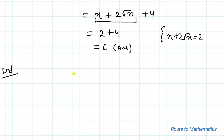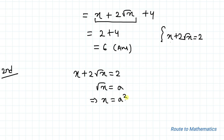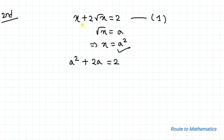In the second method, we have given x plus 2 root x equals 2. Here I'll take root x as a, which means x equals a squared. Substituting a squared into equation 1, we have a squared plus 2a equals 2. One thing to notice is that the value of a must be greater than 0 to satisfy the equation. Taking everything to the left-hand side: a squared plus 2a minus 2 equals 0.